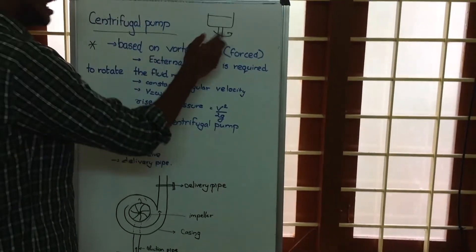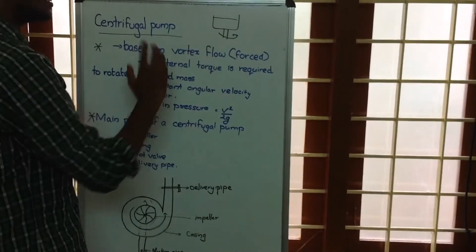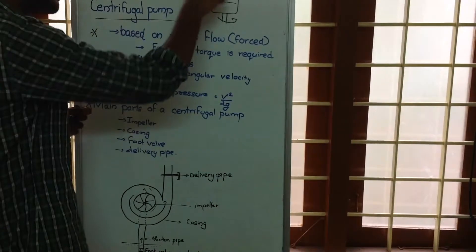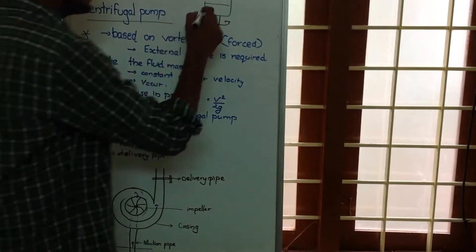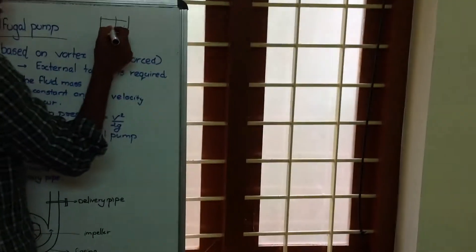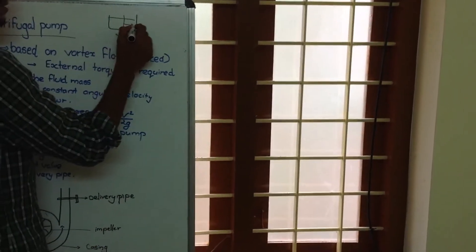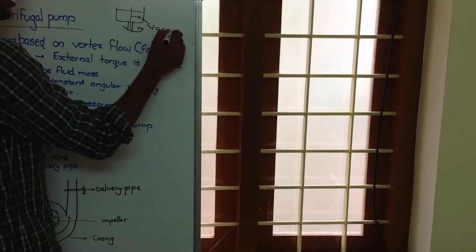So here since we are rotating the given vessel, the angular velocity of fluid inside this vessel will be constant. So omega will be constant so that the velocity of a point from the center is given by v equals omega r.